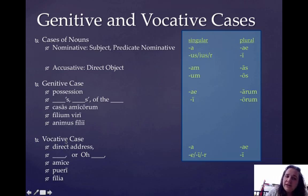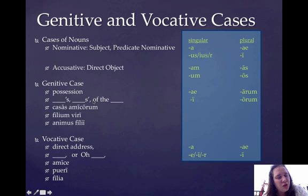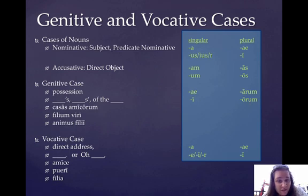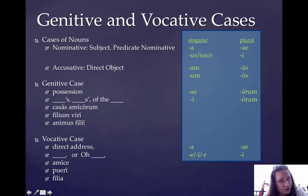In English, we show possession by using an apostrophe-s if it's singular, an s-apostrophe if it's plural, or we can also show possession by saying 'of the blank.' I've also reminded you of the first and second declension singular and plural genitive endings. So we can tell that amicorum is our genitive ending, viri is our genitive ending, and filii — that's our genitive ending.